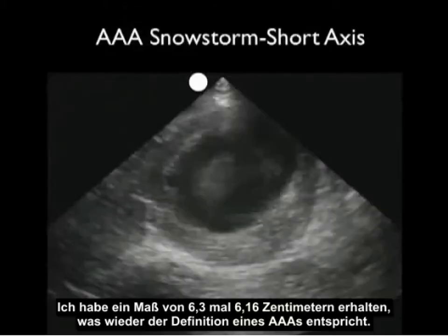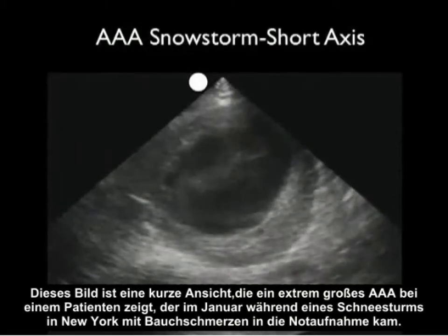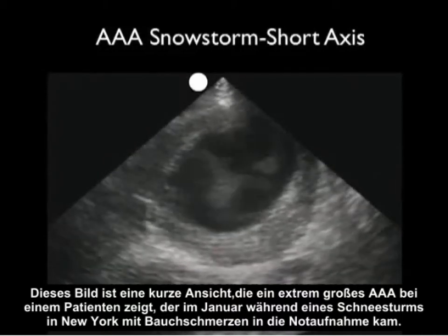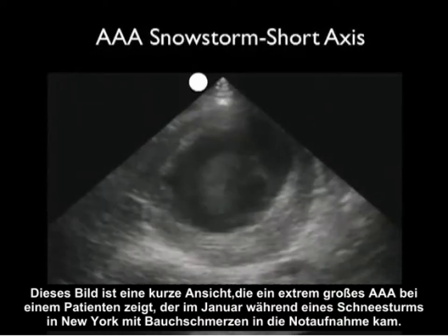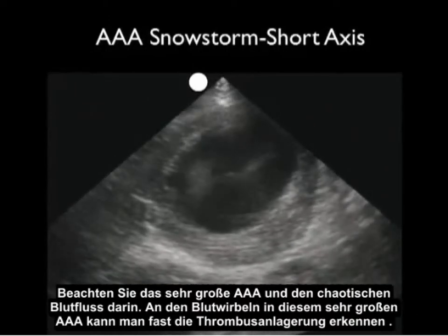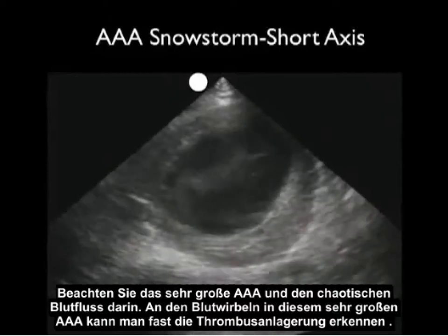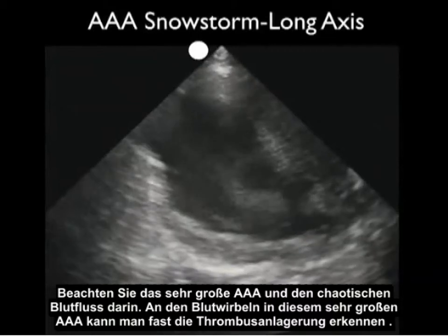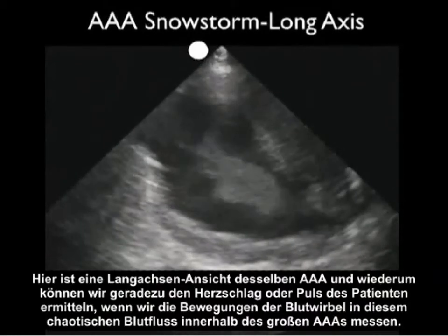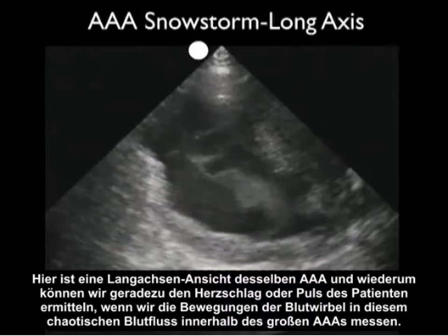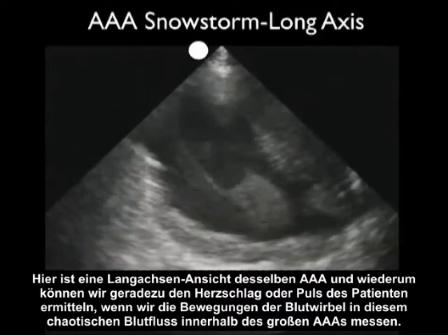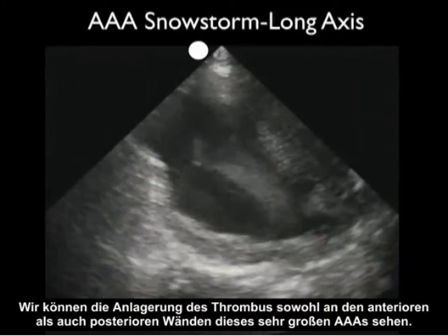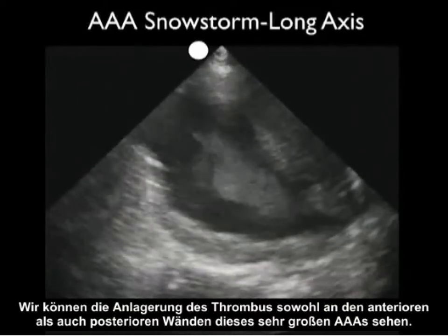This image shows an extremely large AAA in a patient who presented to the ED with abdominal pain during a snowstorm in New York City in January. Notice the very large AAA and the chaotic flow of blood inside — you can almost see the thrombus deposition from the swirls of blood. Here's a long axis configuration of the same AAA, and we can almost take the patient's heartbeat by measuring the movements of the swirls of blood within this chaotic flow. We can see the deposition of thrombus on both the anterior and posterior walls.